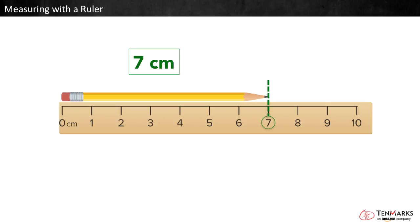Notice that the other end of the pencil lines up with the seven. So if you start with the object at zero, a shortcut to measuring is to see where the other end the pencil lines up. It's at seven, so the pencil is seven centimeters long.